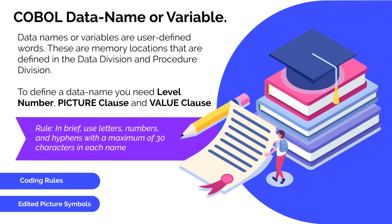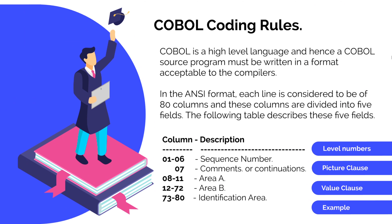COBOL is a high-level programming language and the COBOL program has to be written in a specific format so it can be processed by a compiler. Each line in COBOL is divided into 80 equal columns. Position one to six is used for sequence numbers. Position seven is used for comments — just include an asterisk there. Position eight to eleven is Area A, used to define sections. Position twelve to seventy-two is Area B, where you define paragraph names and other statements. Position seventy-three to eighty is the identification area, which is optional and not used very often.